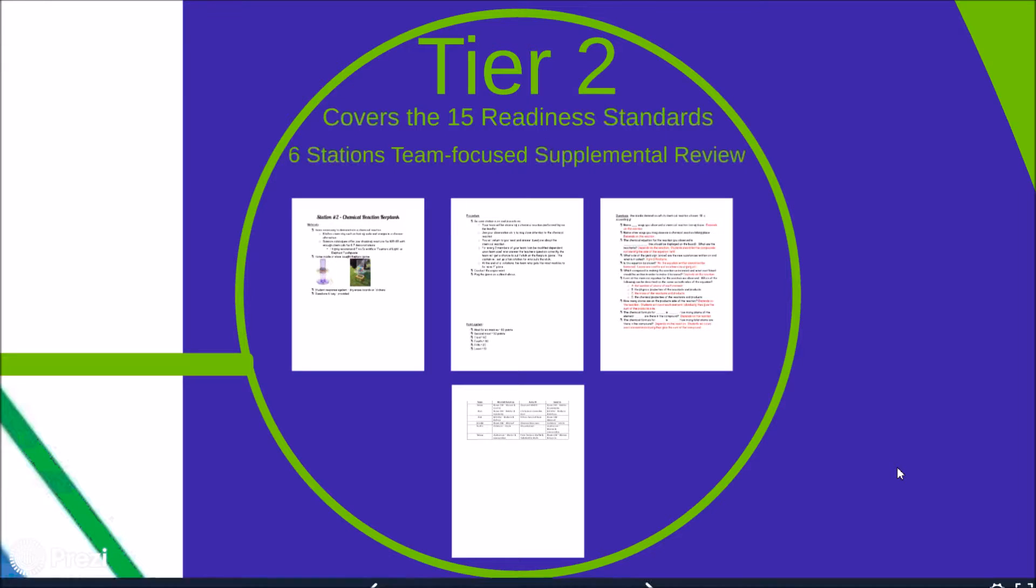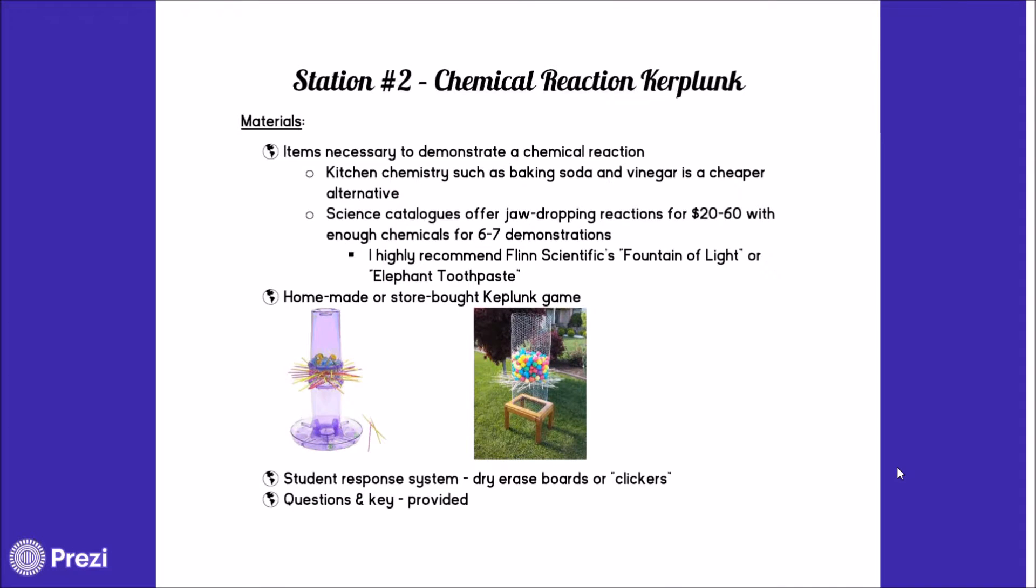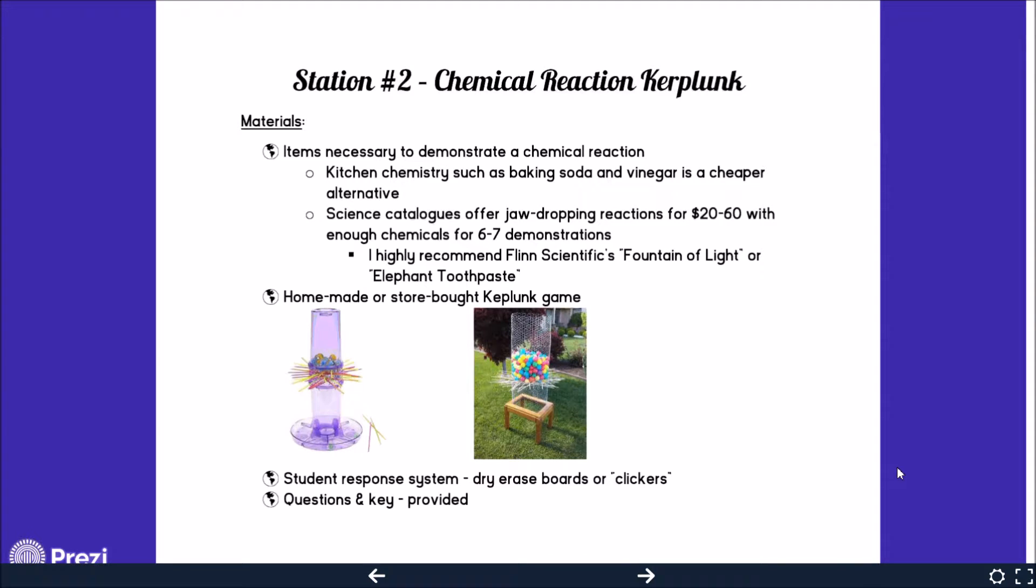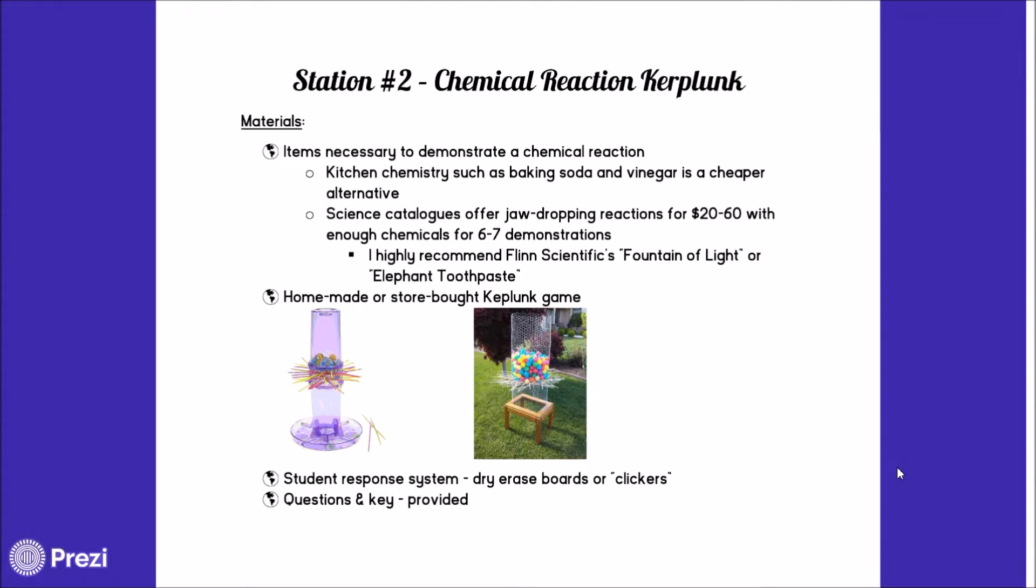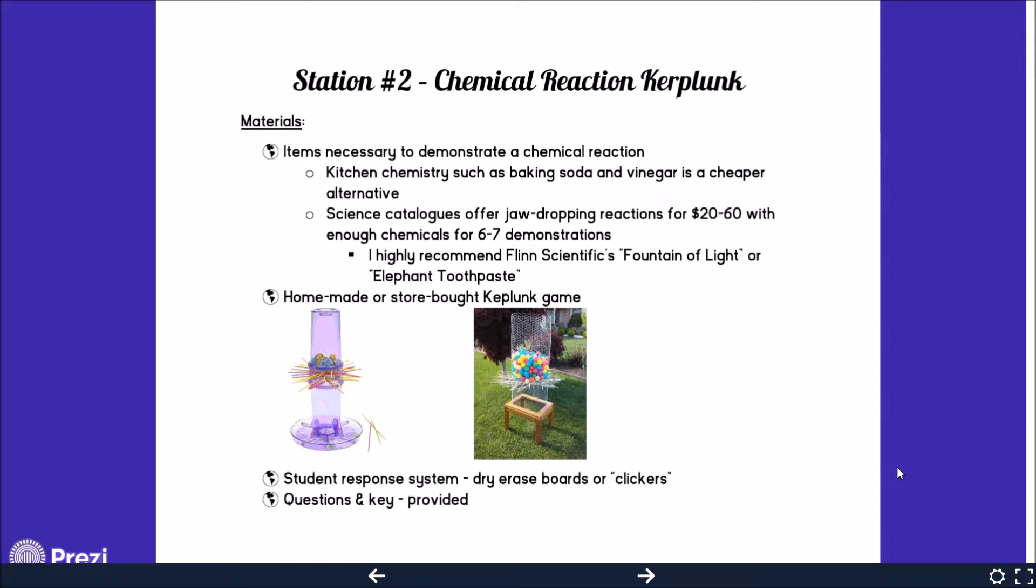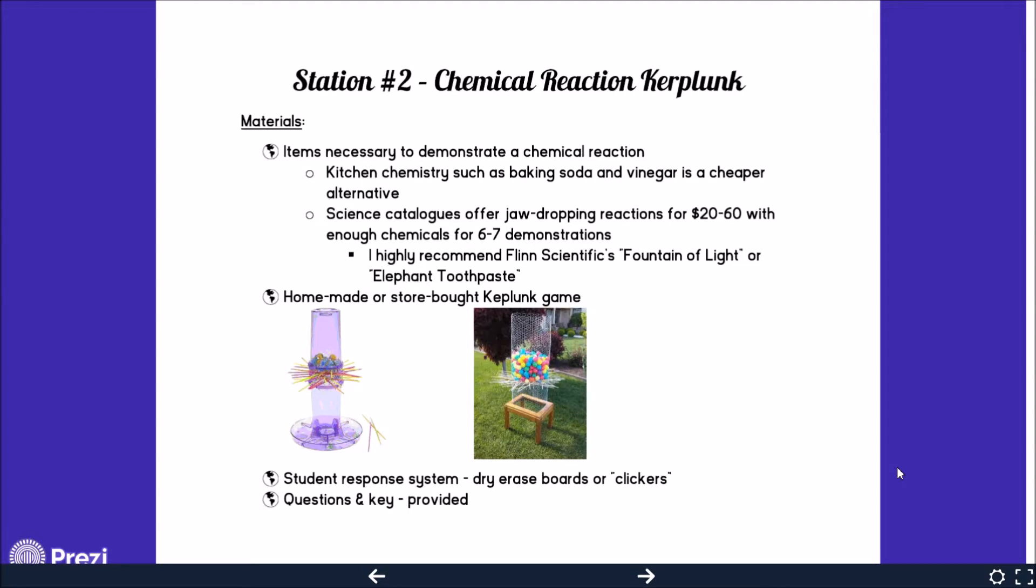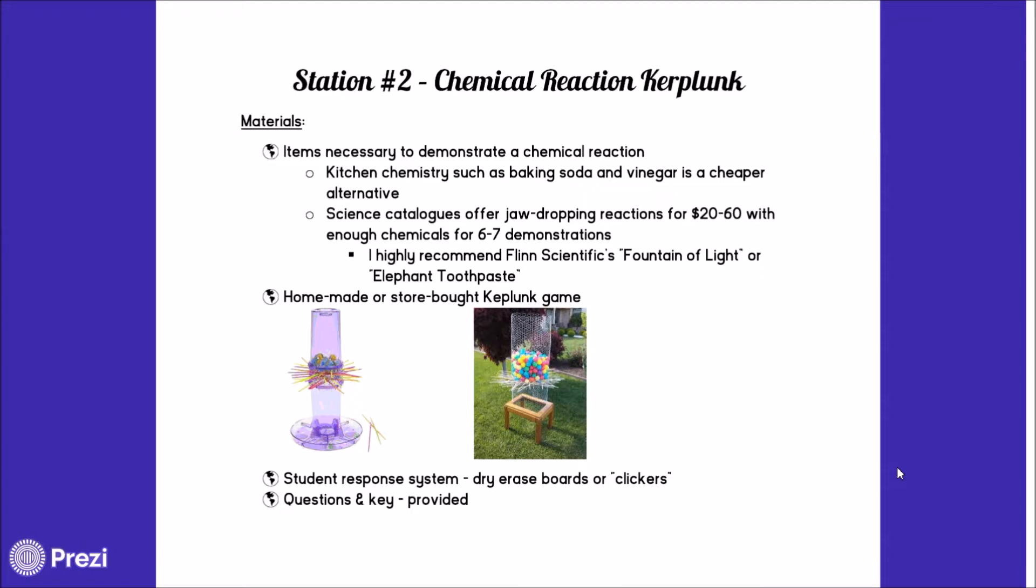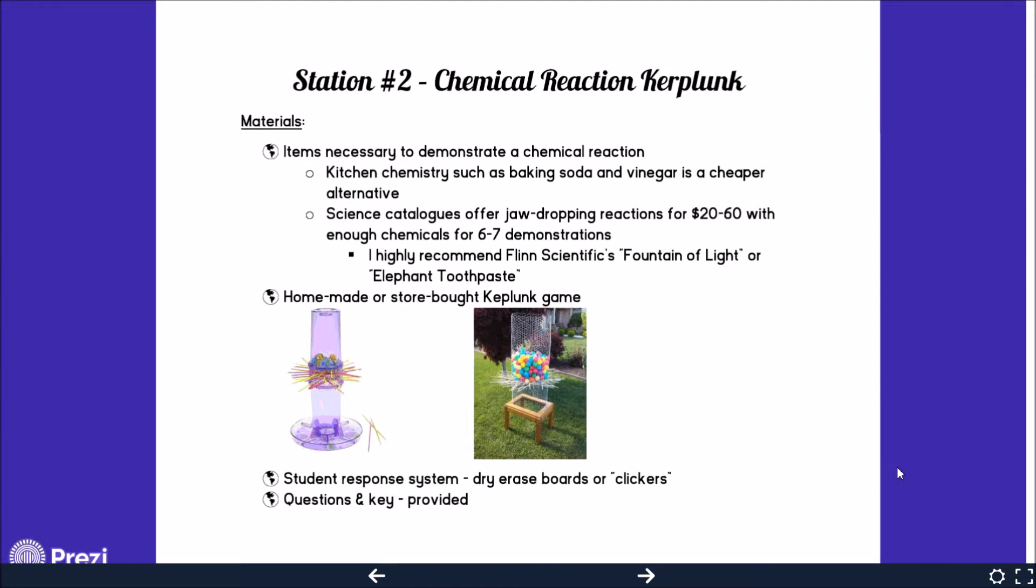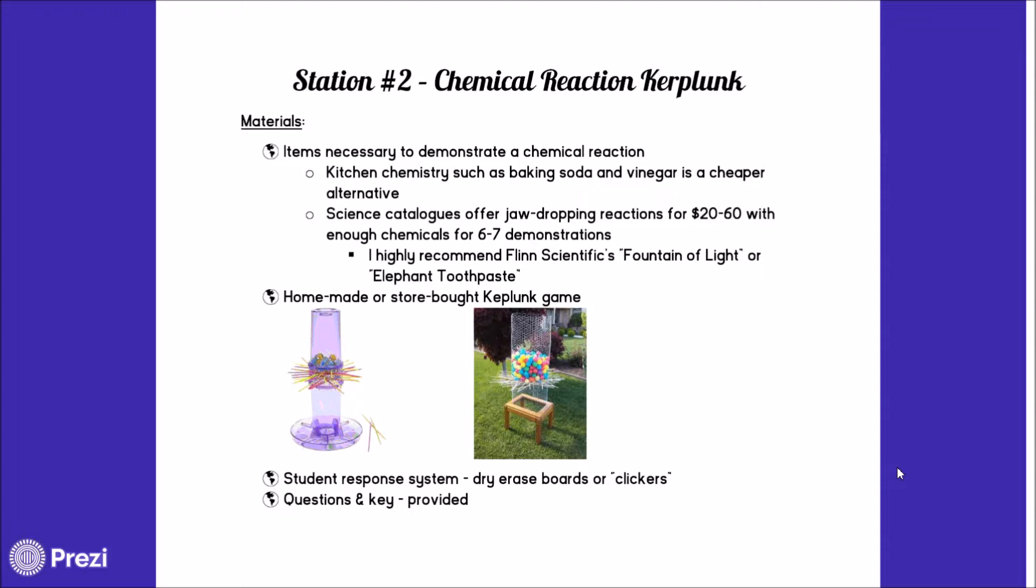Let's take a closer look at what one of the stations would look like in this tier. I've chosen station number two, which is entitled Chemical Reaction Kerplunk. The first thing the teacher will read is the materials they need to be successful. Some of the materials I will be providing. Other materials are going to either have to go out and purchase or create and make on their own. In station two, they're going to need an item to demonstrate a chemical reaction, whether that's baking soda and vinegar they went and bought at the grocery store or something a little more jaw-dropping like a pre-made chemical reaction from a science company such as Flinn. I give some recommendations of ones that were pretty exciting for students. The next thing they're going to need is either a homemade or store-bought Kerplunk game. I give pictures of both. We had some very active dads who enjoyed woodworking and they really got into volunteering and creating the games for us. So it was to no expense for the school.